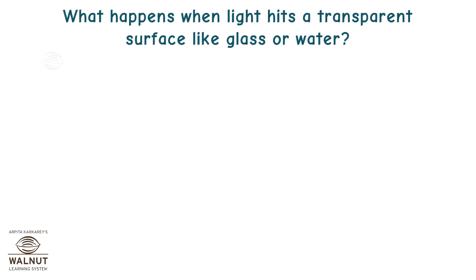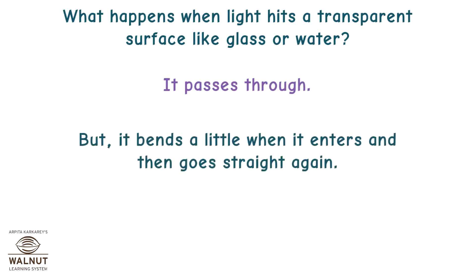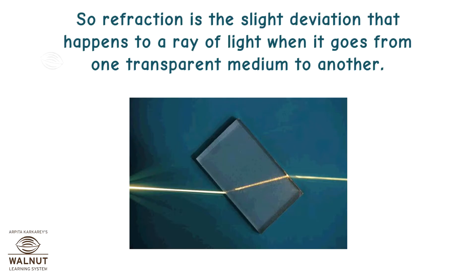What happens when light hits a transparent surface like glass or water? It passes through. But it bends a little when it enters and then goes straight again. This is known as refraction. So refraction is the slight deviation that happens to a ray of light when it goes from one transparent medium to another.